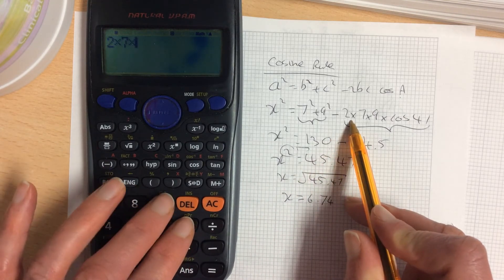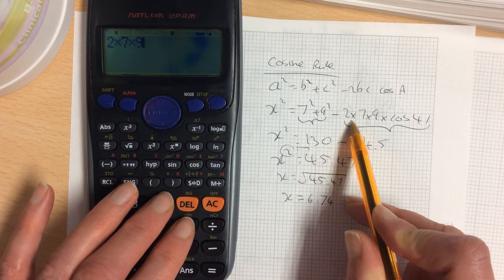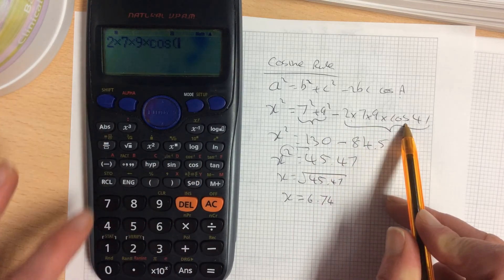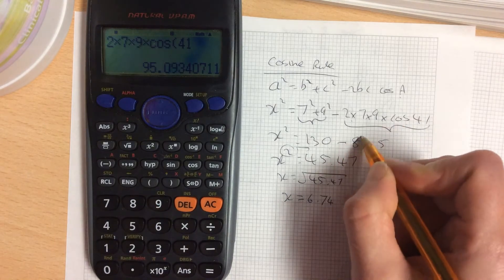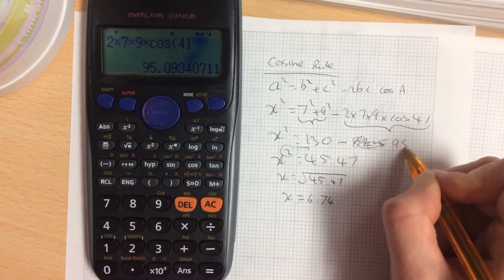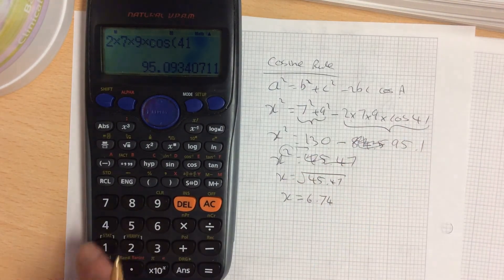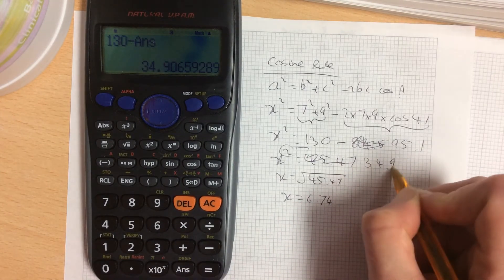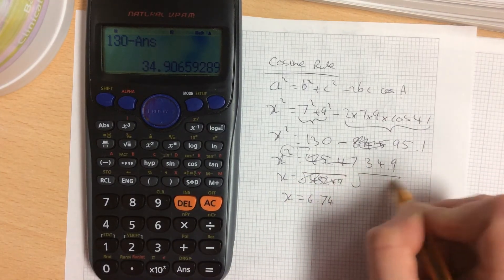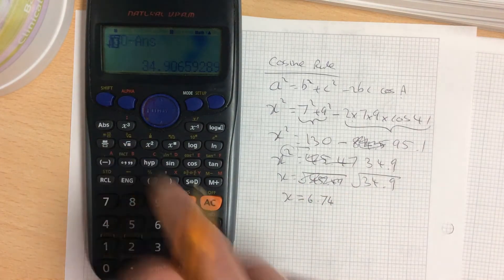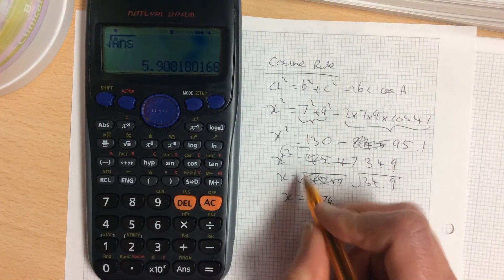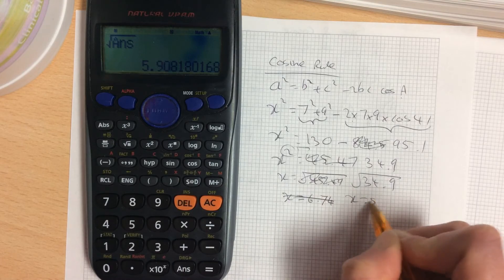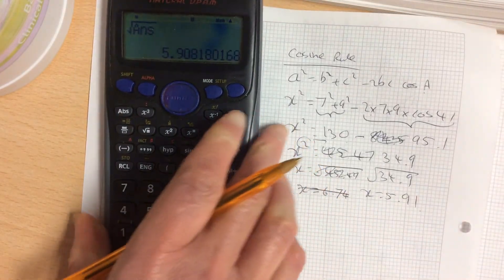2 times 7 times 9 times cosine 41. That's why you always double check the work. There's a lot of stuff going on. You can easily make a mistake in these. So it's going to be the square root of 34.9 to give you an answer of 5.91. Just take your time and check what you're doing.